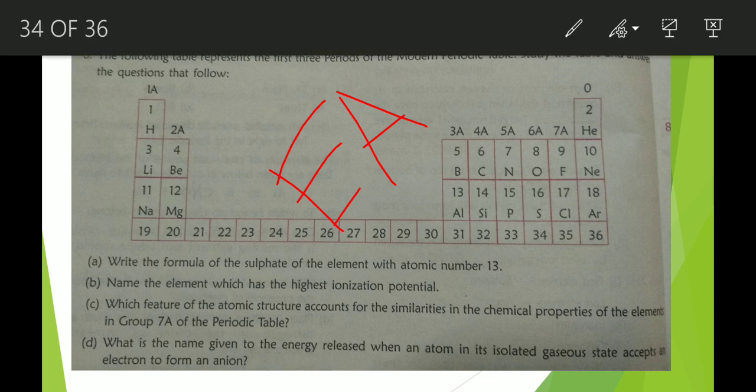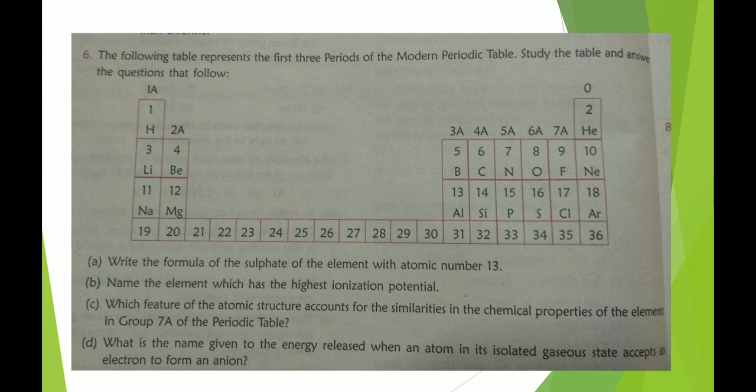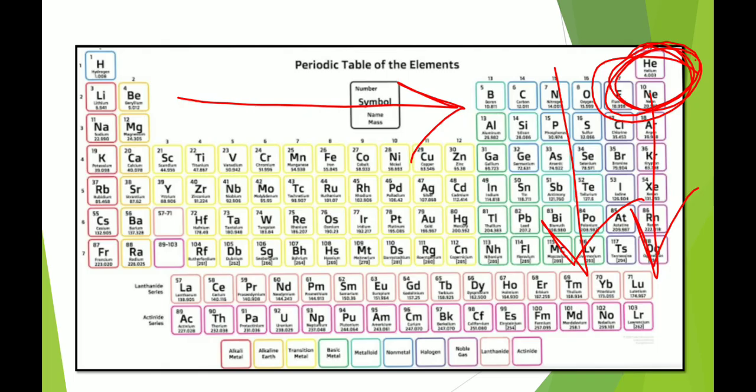All the questions discussed should now be clear. Remember to memorize the trends of periodic properties and at least the first 20 elements of the periodic table in order — then answering questions from the periodic table will be very easy. I will upload videos on other topics very soon. Stay tuned, and if you find my videos informative and helpful, please like, share, and subscribe. Thank you for watching.